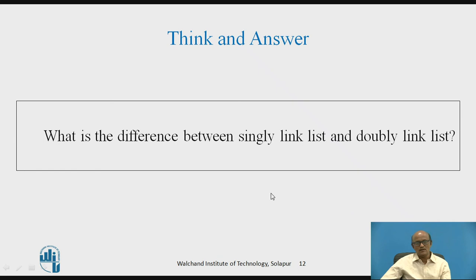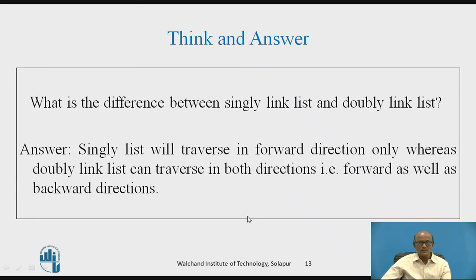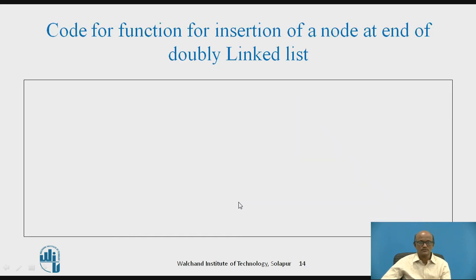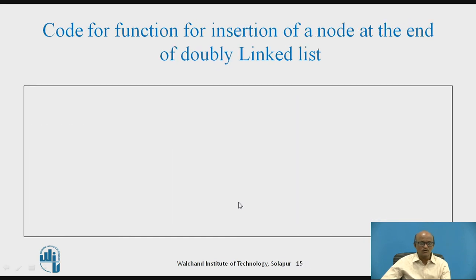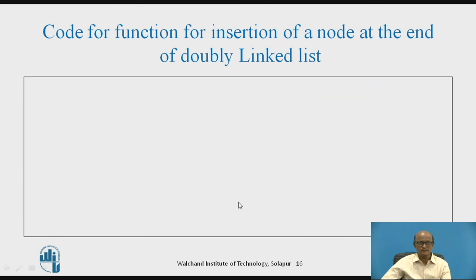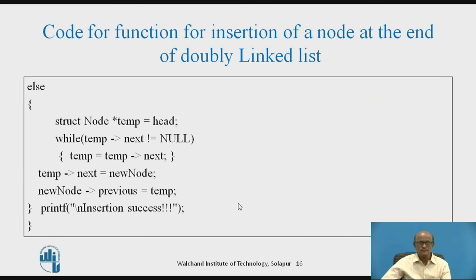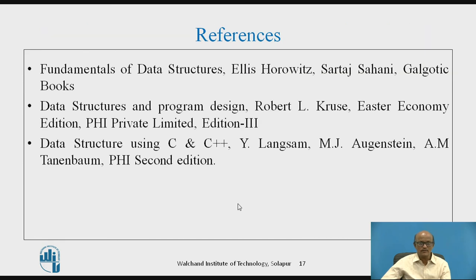What is the difference between a singly linked list and a doubly linked list? The answer is that a singly linked list traverses in the forward direction only, whereas a doubly linked list can traverse in both directions. This is the complete code and these are the references.